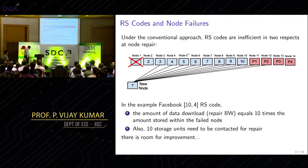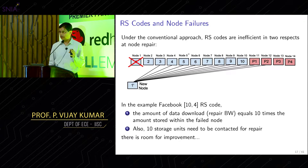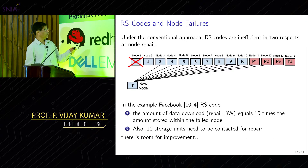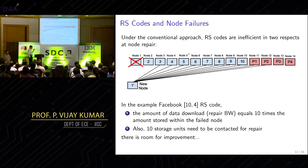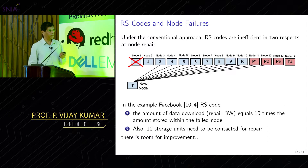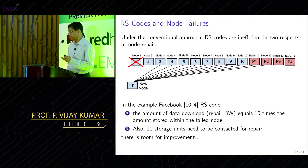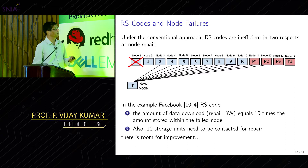Suppose a node fails and you need to generate a replacement. In the conventional approach, the only way people know how to fix this is by downloading all the data from ten other nodes — enough to recreate the entire file — then extracting just one node's worth. So you're downloading ten times as much data as you need. This was noted by a UC Berkeley team. Microsoft also noted that you're contacting ten other nodes, disturbing them from serving data, which is inefficient.